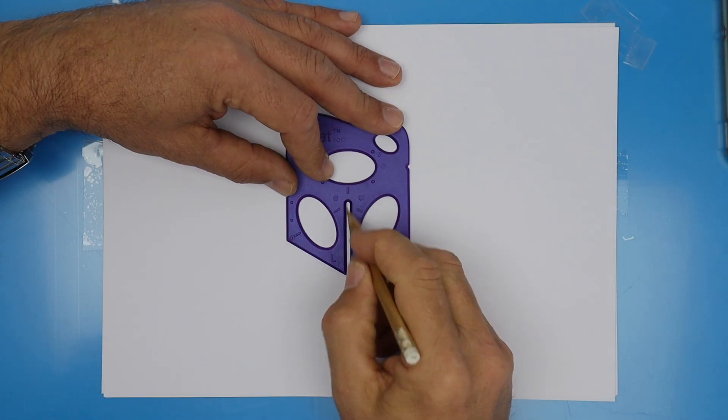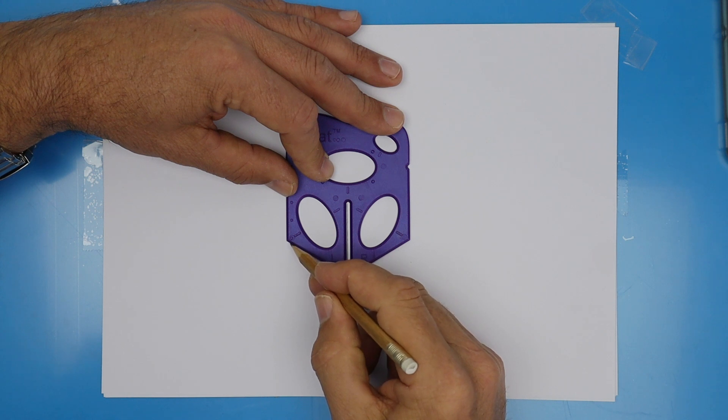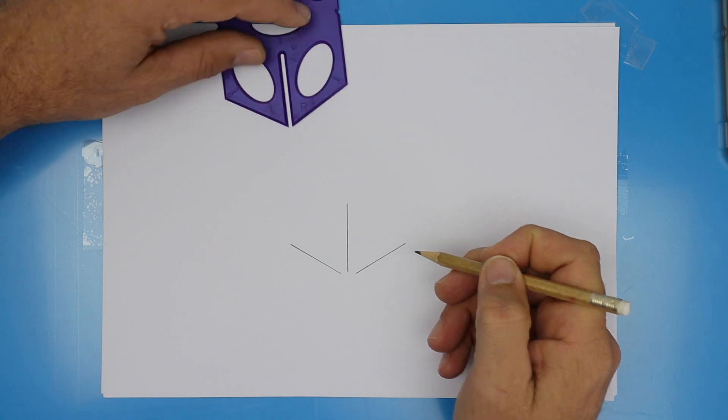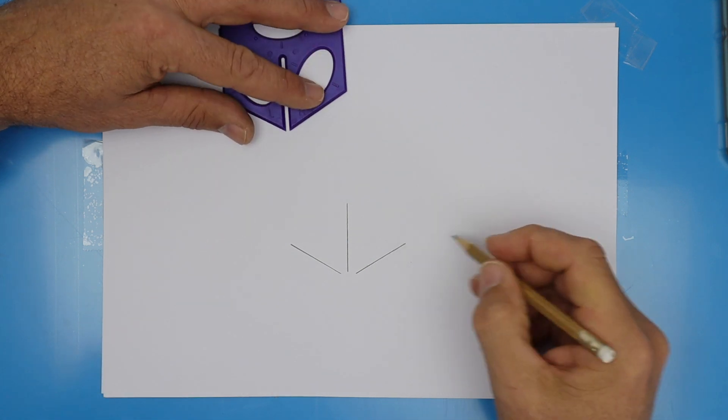A quick refresher: when we're drawing in 3D or isometric, we use mostly three angles, and you'll see them right there. So we're using the splat to draw in 3D today. Let me show you what I mean.